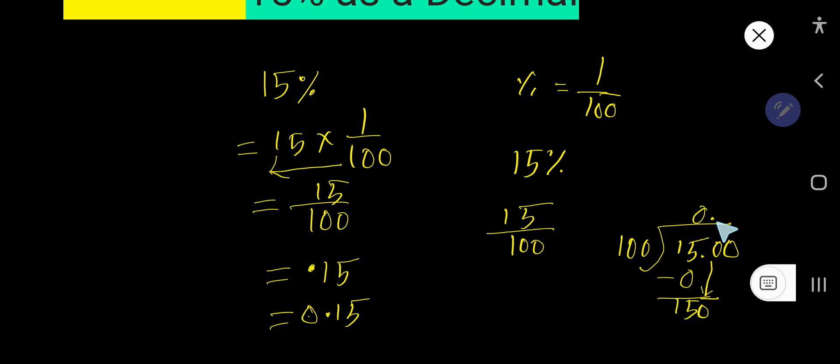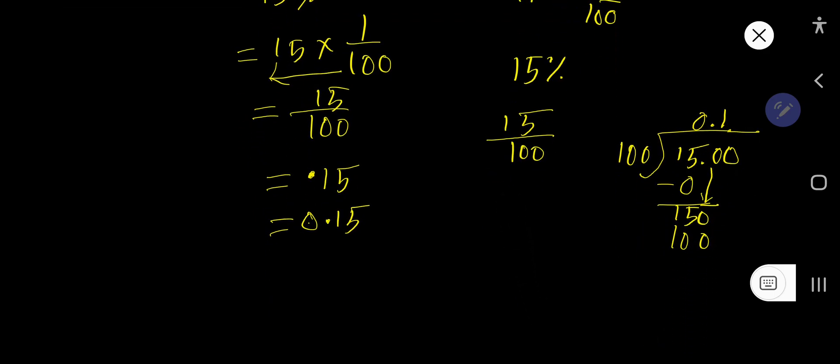But before this zero, we have a decimal point, so write it here. 100 goes into 150 one time. 1 times 100 is 100. If you subtract, you are getting 50. Bring down the second zero.